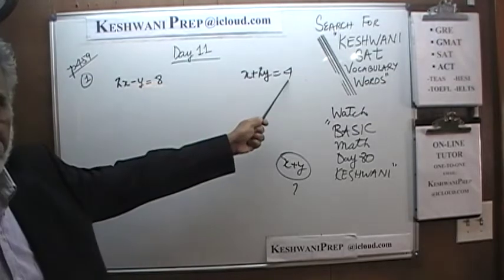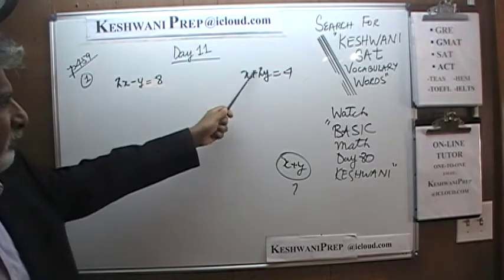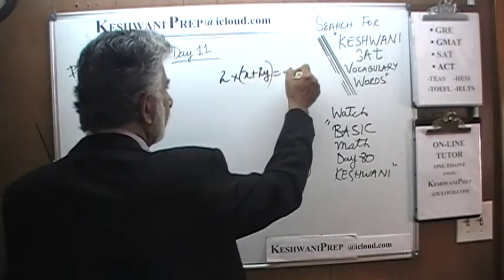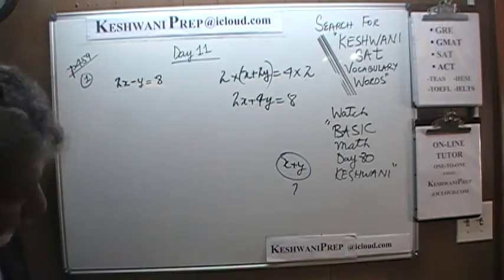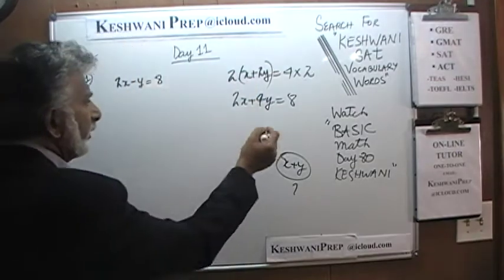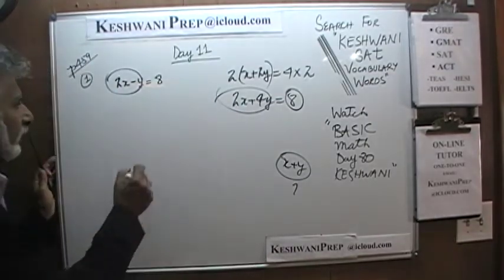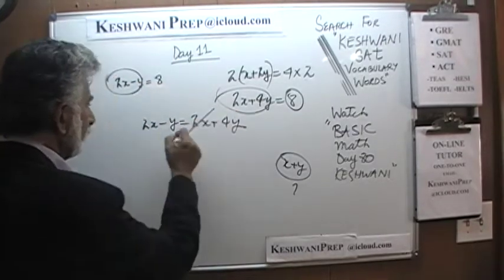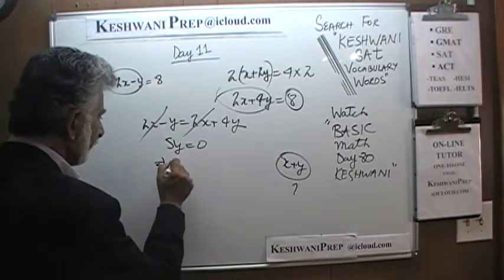I see an 8 here and a 4 here. Why don't we multiply the second equation by 2 so that we get an 8 on that side as well. Multiplying by 2 gives us 2x plus 4y equals 8. Now we have 8 on both sides, which means 2x minus y must equal 2x plus 4y. The 2x drops out, and bringing the y over gives us 5y equals 0, which implies y equals 0.